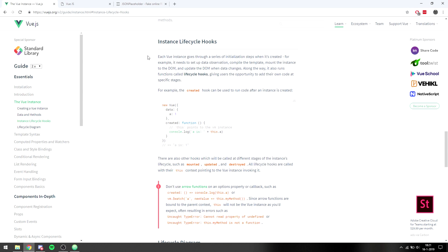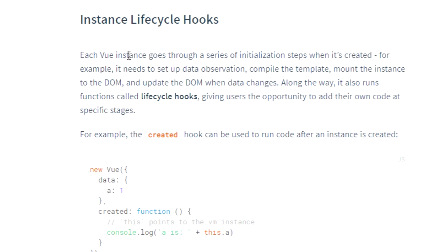On their website they have a really good section about instance lifecycle hooks. They explain that each Vue instance goes through a series of initialization steps when it's created — for example, it needs to set up data observation, compile the template, mount the instance to the DOM, and update the DOM when the data changes. Along the way it also runs functions called lifecycle hooks, giving users the opportunity to add their own code at specific stages.